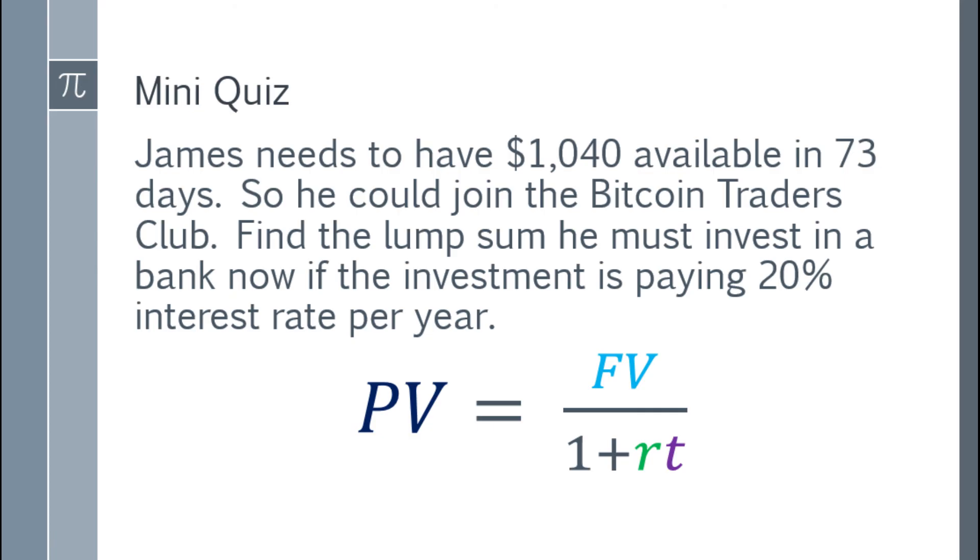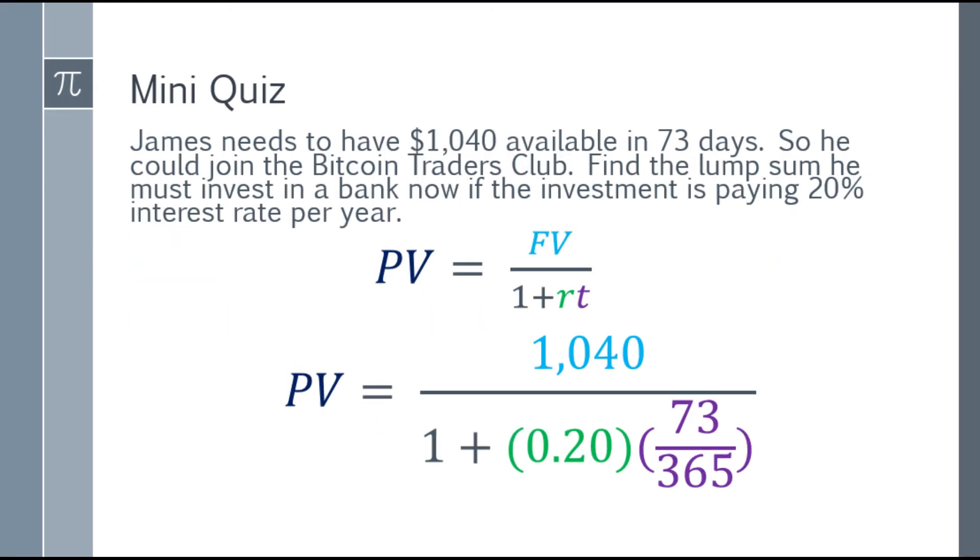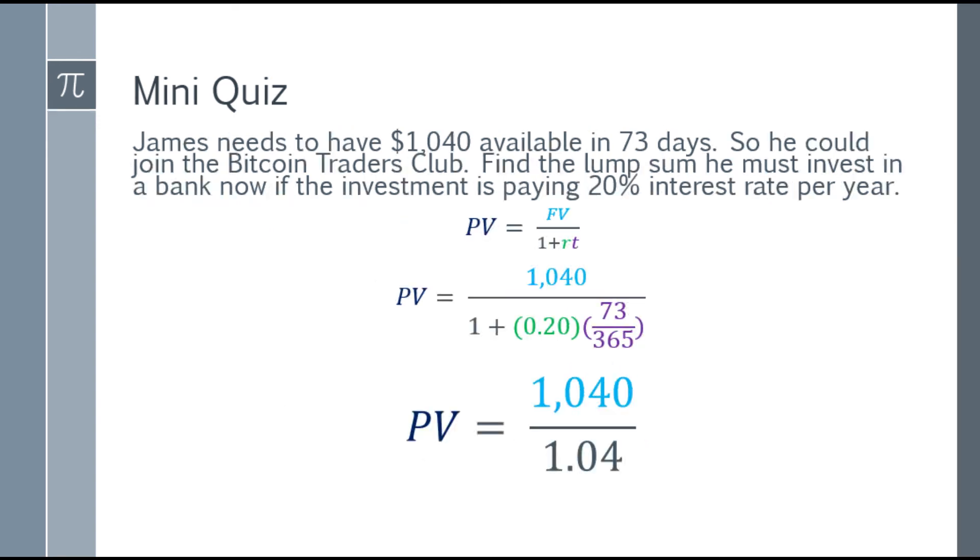So our present value is equal to $1,040, fraction bar, 1 plus 0.2 or 0.20. Because 20%, right? You have to make it decimal. Now, for 73 days, again, the time is dependent on the year. There are 365 days in a year. Your given is only 73. So that will be 73 over 365. Now, we're going to multiply it and simplify the denominator. 0.20 times 73 over 365, plus 1, the answer in our denominator will be 1.04.